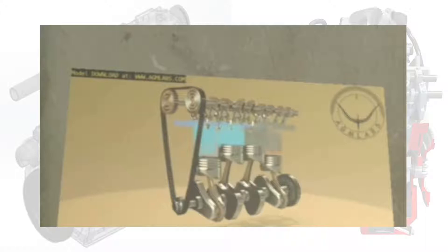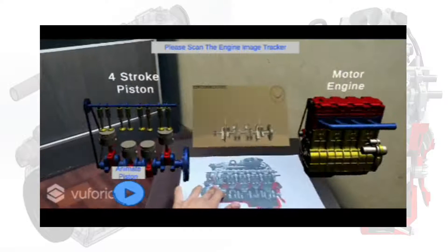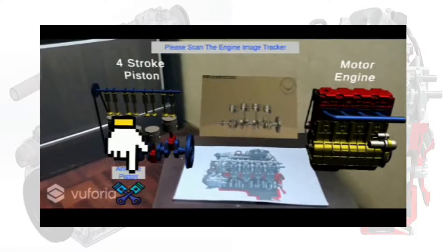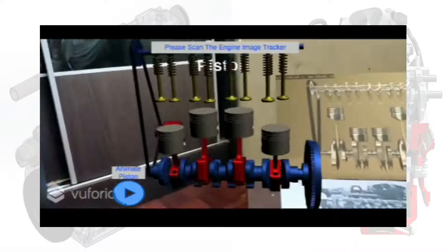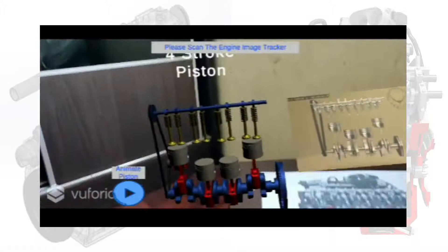To increase the user's understanding of how the Cars Engine works, the user can press the animate piston button. This will move the pistons and show how the actual Cars Engine looks when it is working. The user can also zoom in or out on the engine by pinching the image using two fingers. With this application, we believe it will provide knowledge in an interactive and ergonomic way, and raise awareness about the importance of taking care of the Cars Engine.